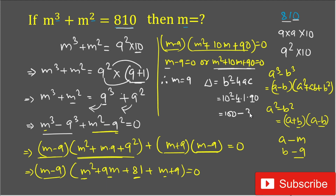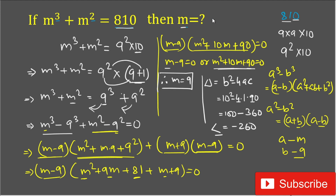The discriminant is -260, which is less than 0, so the quadratic has no real solutions. Therefore, the only real value of m is 9. If you liked the video, do not forget to subscribe to my channel. Thank you for watching.